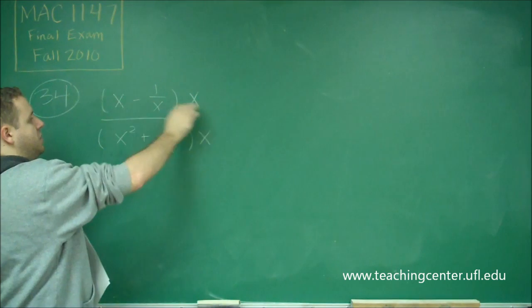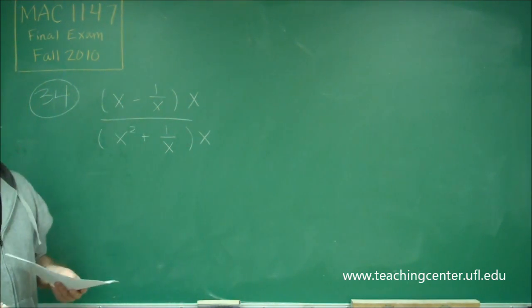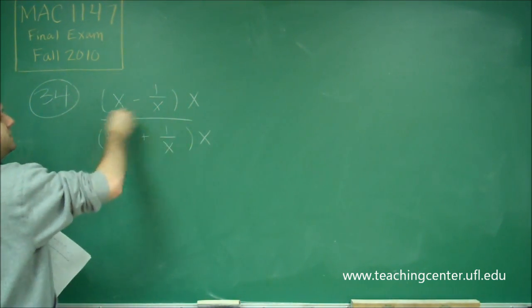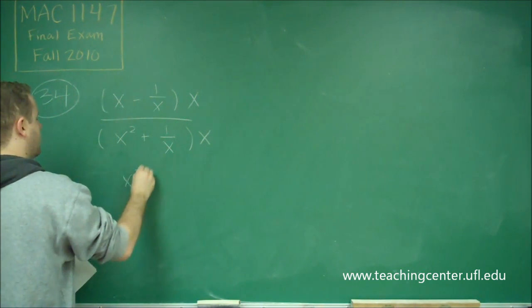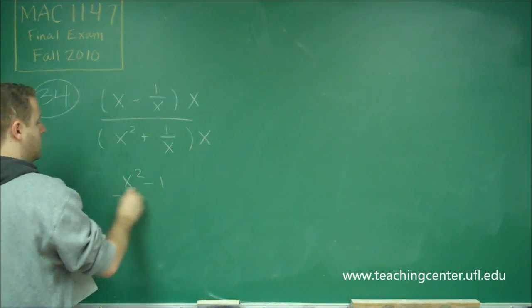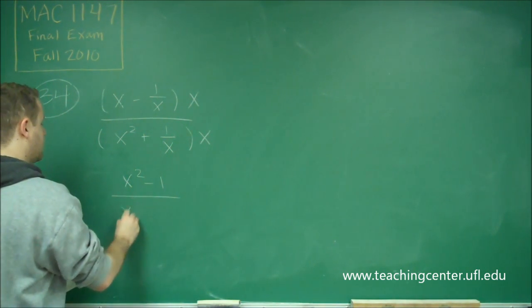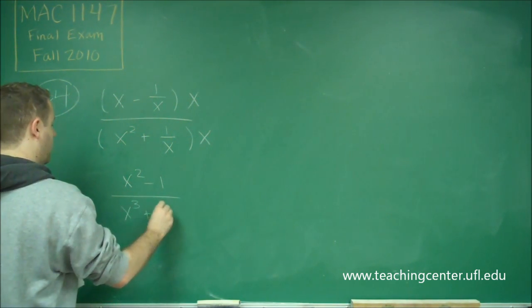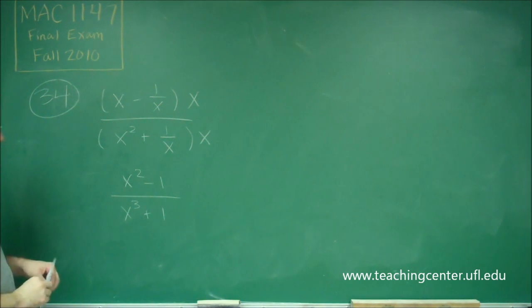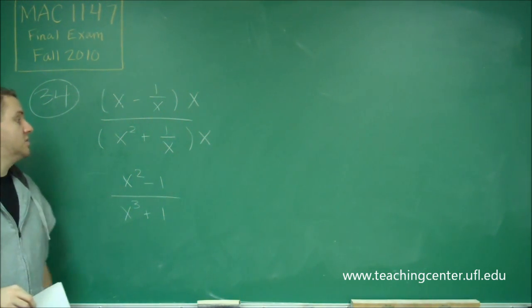If we multiply through by x, we'll get rid of these denominators, so that's exactly what we want. When we multiply the top through by x, we get x squared minus 1, and when we multiply the bottom through by x, we get x cubed plus 1. This has simplified things quite a bit for us, but we're not done yet because both of these are factorable.